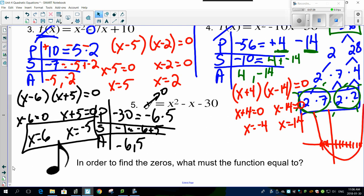So here's an important note: in order to find the zeros, what must the function equal? Of course, you have to let this entire function equal to zero, which we did every single time here, right?